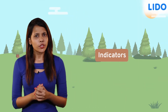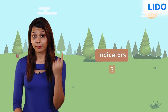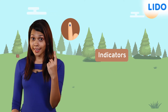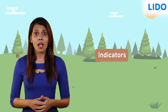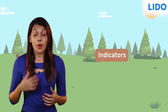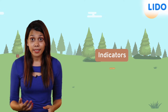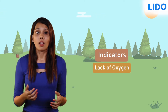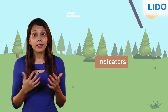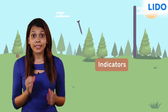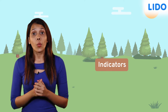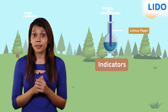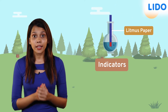Hi guys, today we're going to talk about indicators. Do you know what indicators are? This mark on my nail indicated that I voted on election day. When I breathe heavy, it indicates there's a lack of oxygen here. When an iron nail is pulled by a rod, it indicates that this rod is magnetic. Similarly, when in a liquid blue litmus turns red, it indicates that the liquid is acidic.